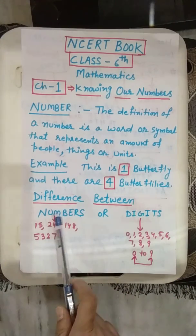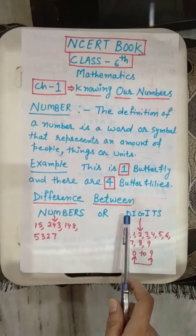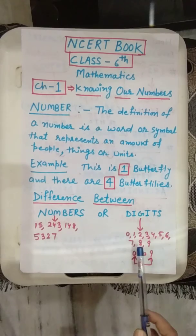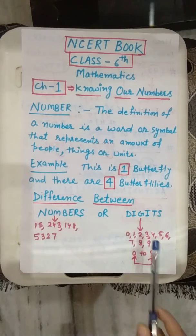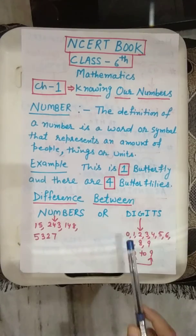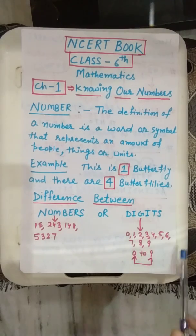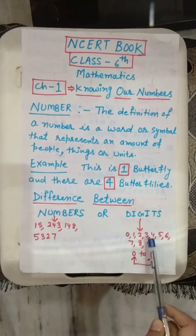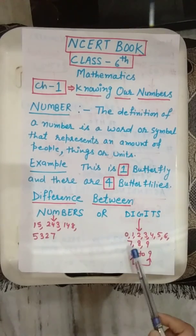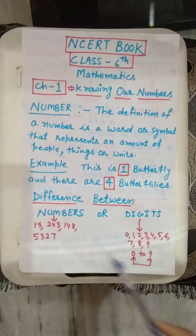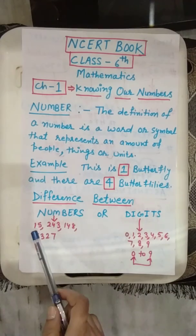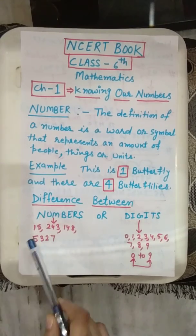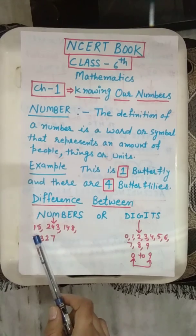Now we will discuss the difference between numbers and digits. A digit is a single numerical symbol from 0 to 9. So 0, 1, 2, 3, 4, 5, 6, 7, 8, 9 — these are digits. A number is a string of one or more digits. For example, 15 is a number made of 2 digits.